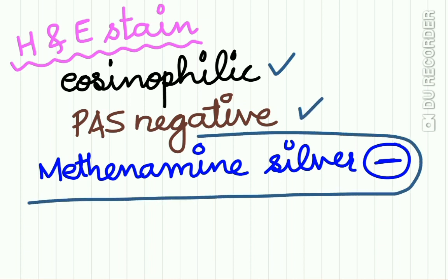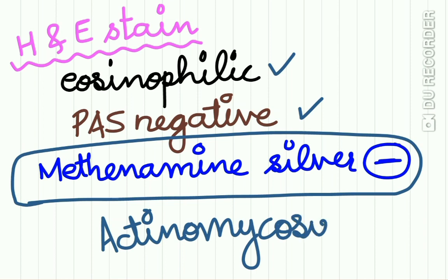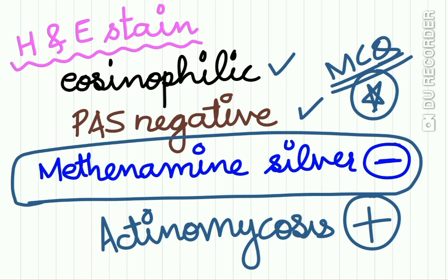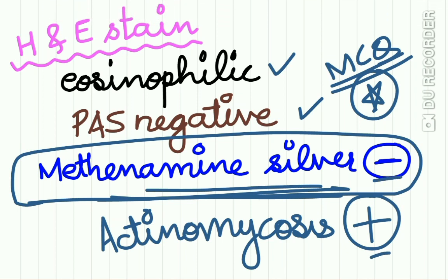Under H&E stain, the granules seen in the lesion are mostly eosinophilic, PAS-negative, and they stain negative for methenamine silver. The granules found in actinomycosis are positive for methenamine silver, while the botryomycosis granules are negative. This is a key differentiating point — remember for your MCQs: methenamine silver staining is positive for actinomycosis and negative for botryomycosis.